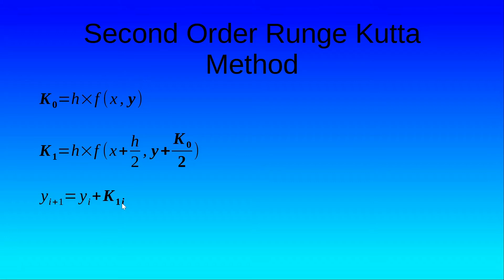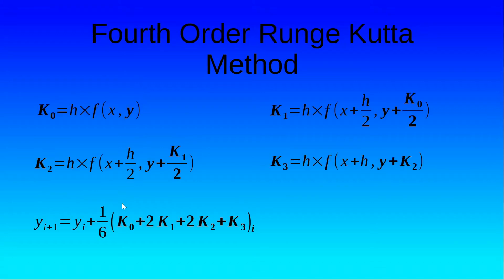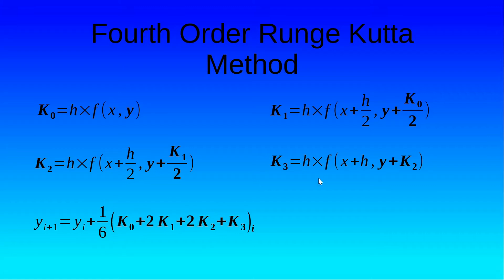In the fourth order Runge-Kutta method, we calculate k0, then k1 as h·f(x + h/2, y + k0/2), then k2 as h·f(x + h/2, y + k1/2), and k3 as h·f(x + h, y + k2). Then we take the weighted mean of these k values and add it to yi to get the next iteration yi+1. All this can be understood by taking up an example.